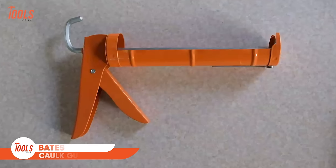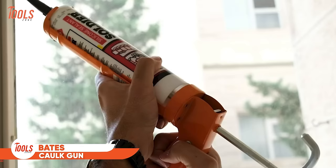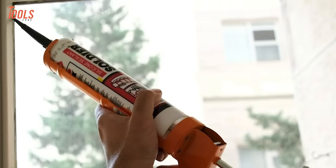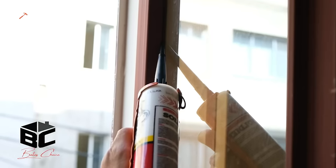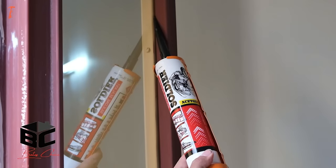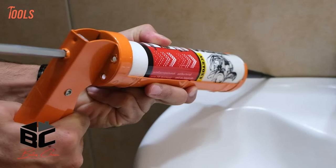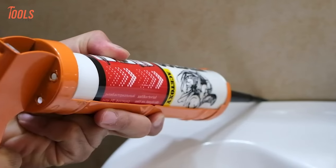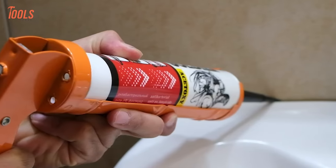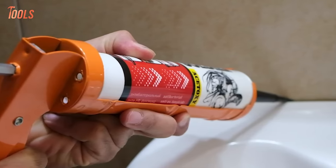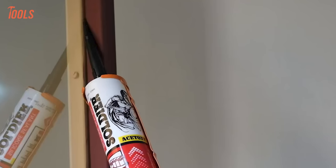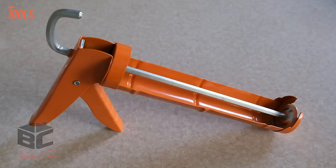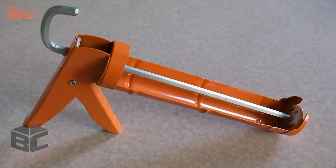Meet the Bates caulk gun that allows you to easily apply sealants, adhesives, and other thick materials into cracks and gaps. The smooth rod action of this caulk gun makes it effortless to dispense the perfect amount of material precisely where you need it. Its drip-free design prevents messy spills. The durable construction and high-thrust ratio ensures you can force even the thickest materials through for a proper seal. Whether caulking windows, sealing bathrooms, or any other job, this caulk gun makes the task quick and mess-free.